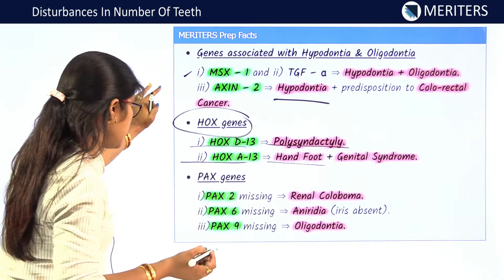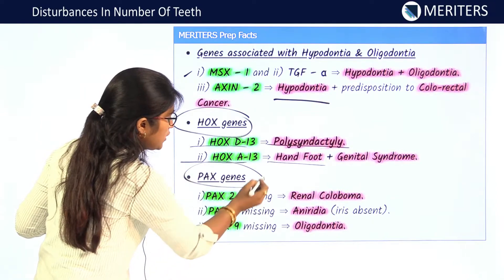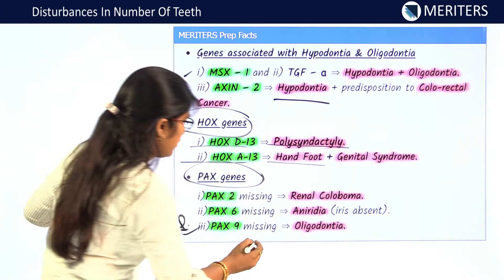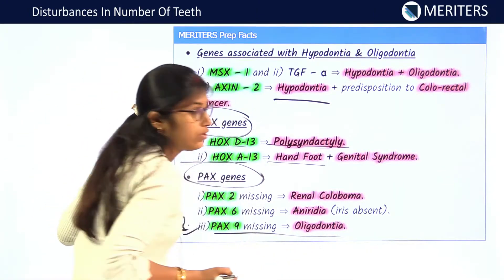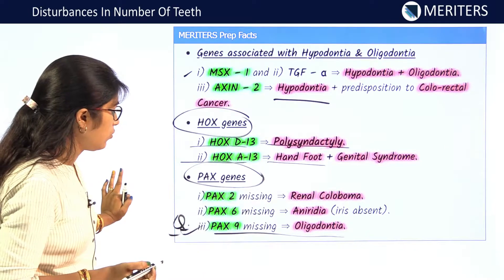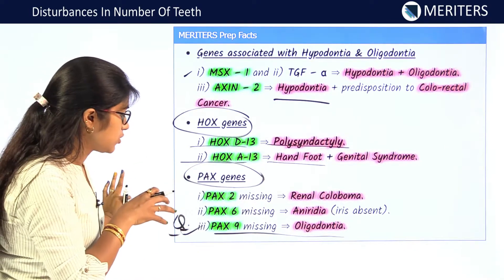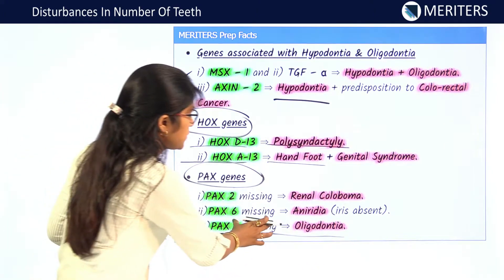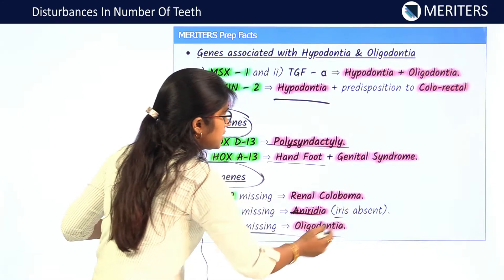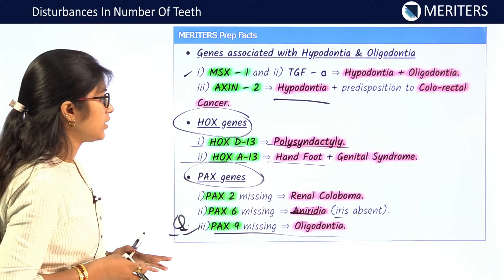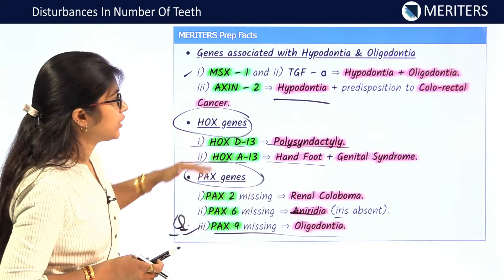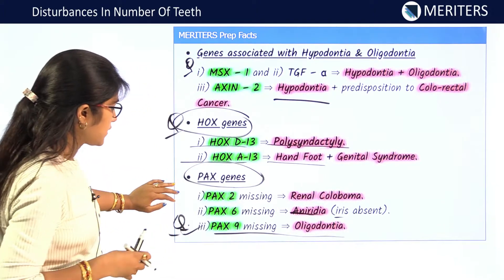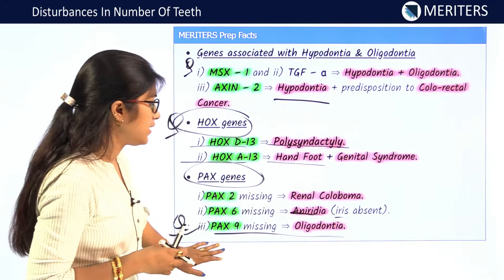Among PAX genes, the most important one is PAX9. If PAX9 is missing, it leads to oligodontia — PAX9 is responsible for localization of tooth germs. If PAX6 is missing, it leads to aniridia, meaning the iris is absent. If PAX2 is missing, it causes renal coloboma. Out of these, PAX9 is the most important, responsible for oligodontia.